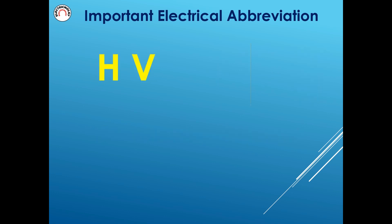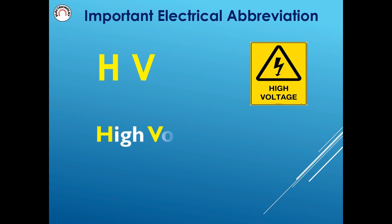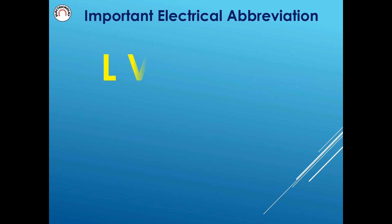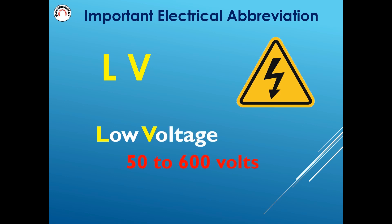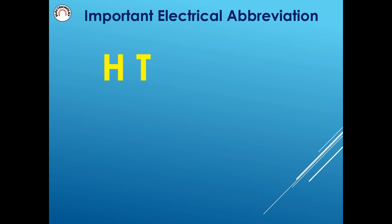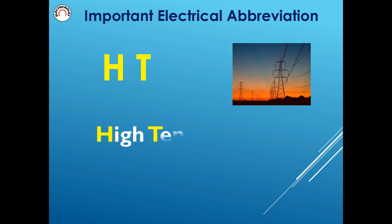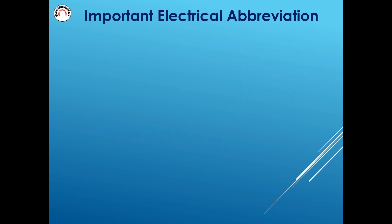HV: High Voltage — above 600 volts. LV: Low Voltage — 50 to 600 volts. HT: High Tension. LT: Low Tension.